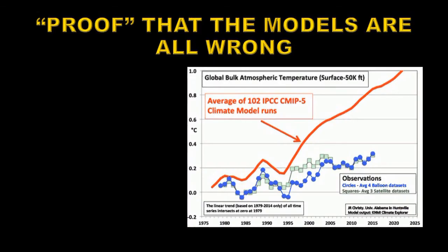We often see plots like this that prove that the models do not agree with the data. The red curve here is the average of many climate model runs, and below we have some points that show data. You can see that the data diverges away from the models fairly rapidly, and if that were true it would be a problem — but it isn't.